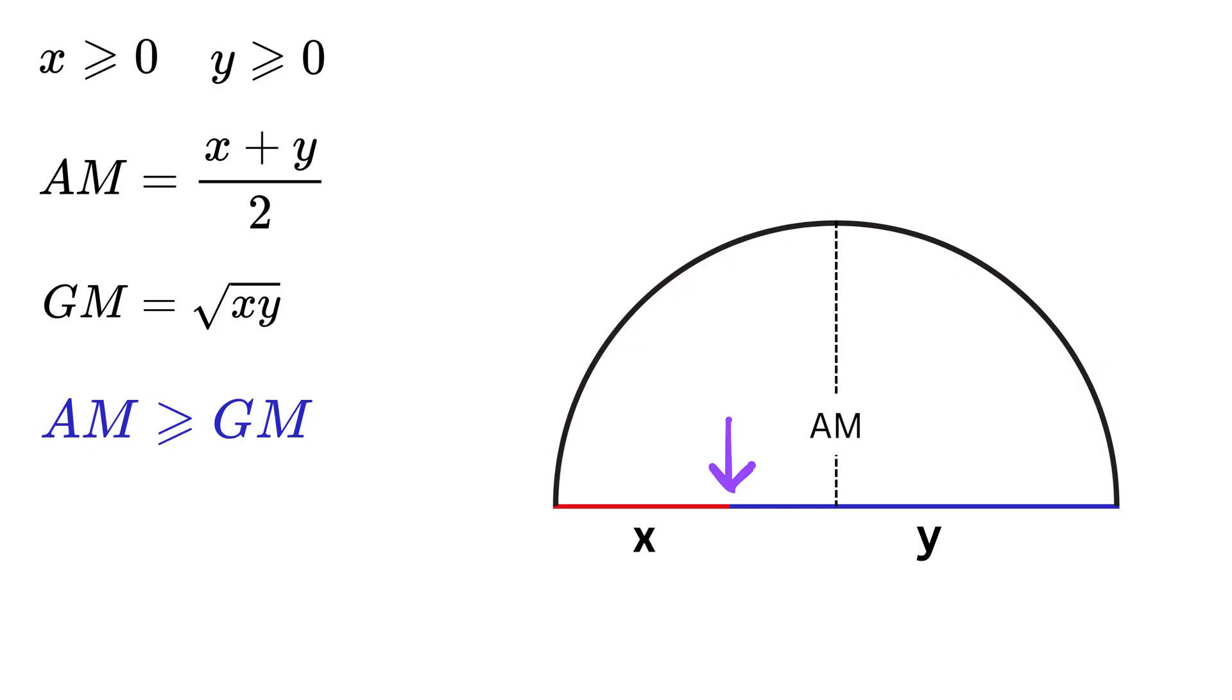Now from this point, draw a perpendicular line, such that it meets the semicircle like this. Label this length as p. Now connect this point with the ends of the diameter like this. We get a triangle, right?